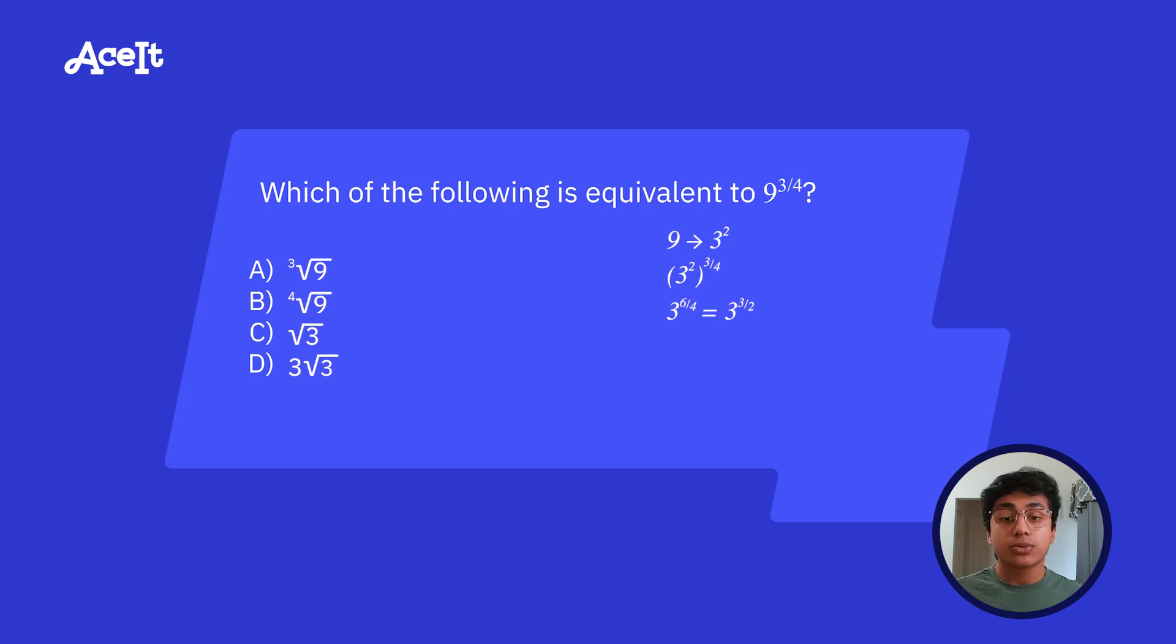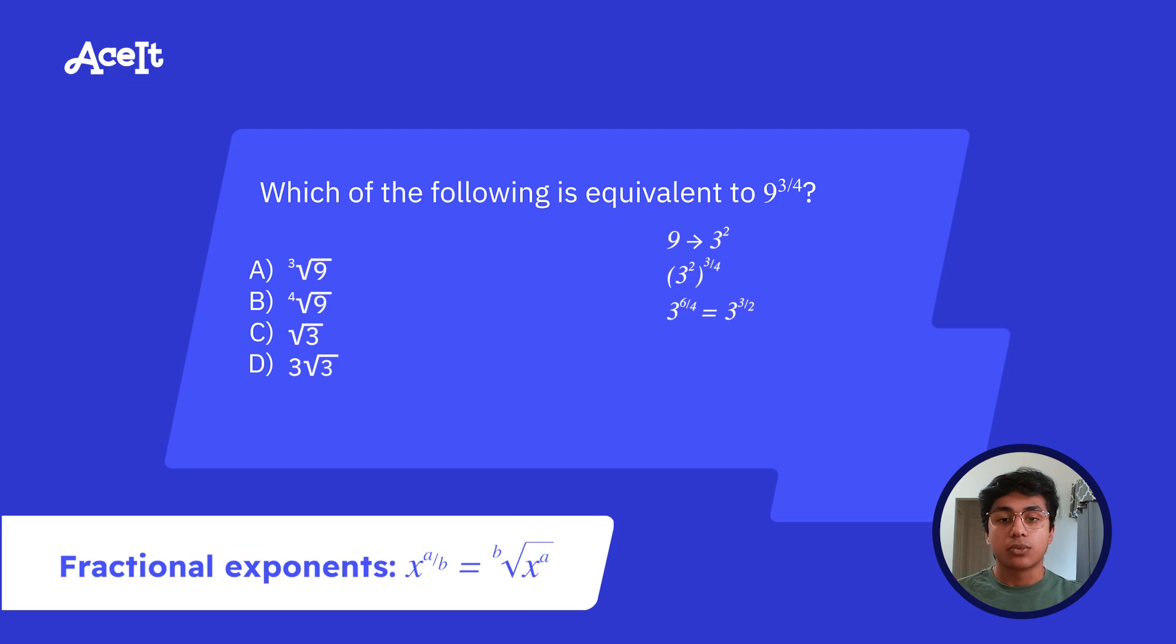So now we have three raised to the power of three over two. Now we can apply the fractional exponent rule to get square root of three cubed or the square root of 27.